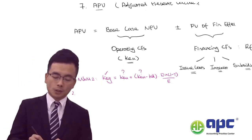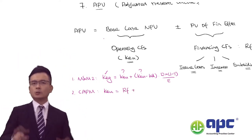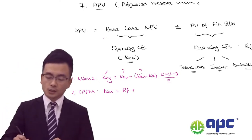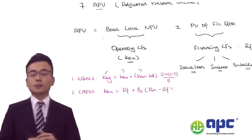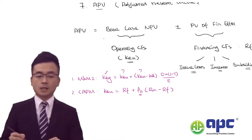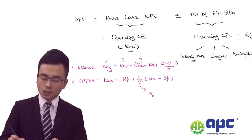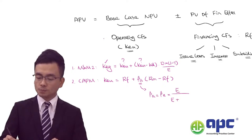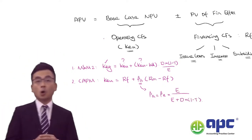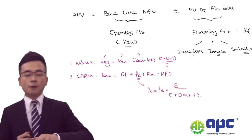The second way to calculate the cost of equity ungeared uses the capital asset pricing model: cost of equity ungeared equals risk-free rate plus asset beta times (market yield minus risk-free rate). To calculate the asset beta, use the de-gear exercise: asset beta equals equity beta times (equity value divided by equity value plus debt value times one minus tax rate).